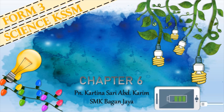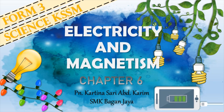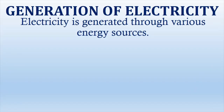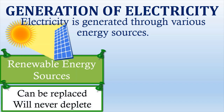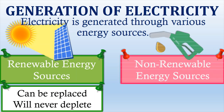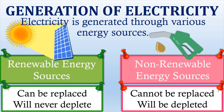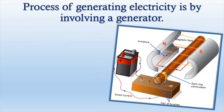We are going to start the topic of Chapter 6: Electricity and Magnetism, which is a continuation of the same topic from Form 2. Electricity is generated through various energy sources, which can be classified into two main groups. The first is renewable energy sources — energy sources that can be replaced continually and will never deplete. The second is non-renewable energy sources — energy sources that cannot be replaced and will deplete one day.